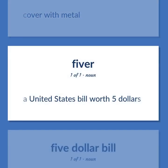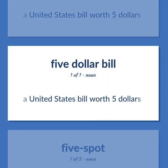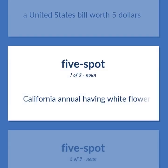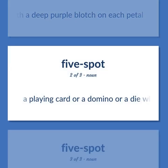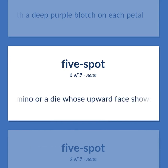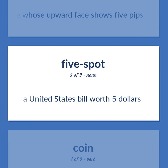A United States bill worth $5. California annual having white flowers with a deep purple blotch on each petal. A playing card or a domino or a die whose upward face shows 5 pips. A United States bill worth $5.